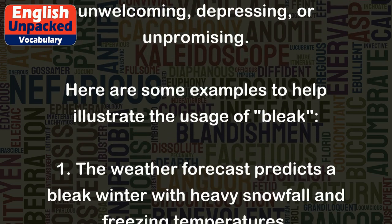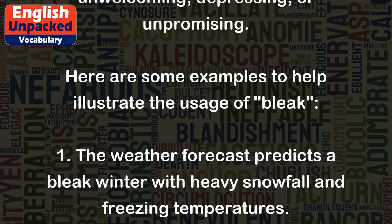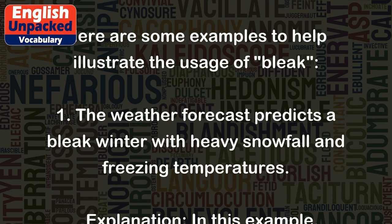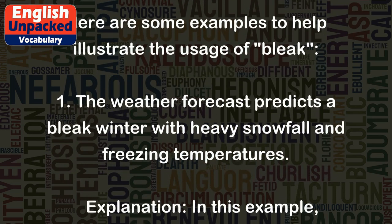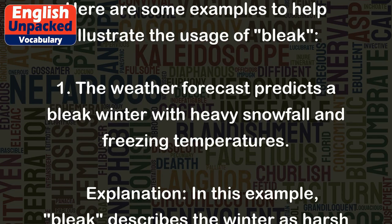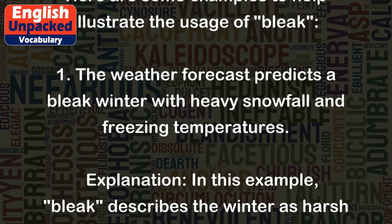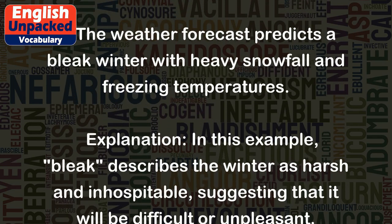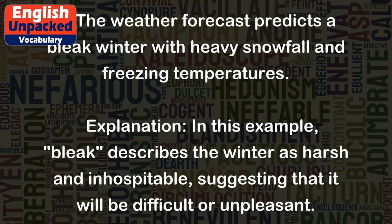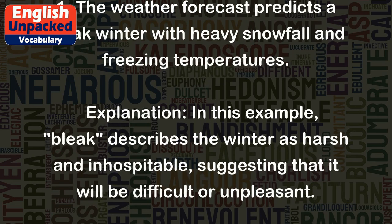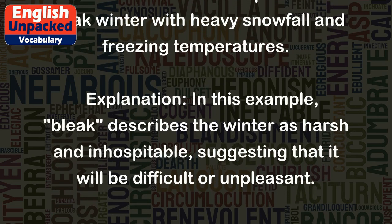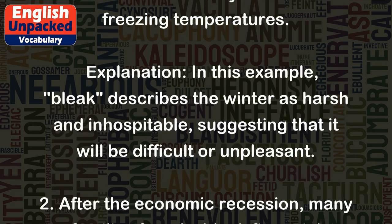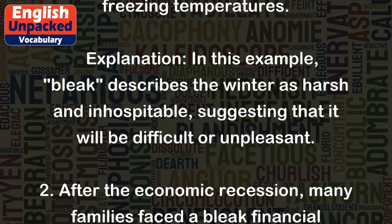1. The weather forecast predicts a bleak winter with heavy snowfall and freezing temperatures. Explanation: In this example, bleak describes the winter as harsh and inhospitable, suggesting that it will be difficult or unpleasant.